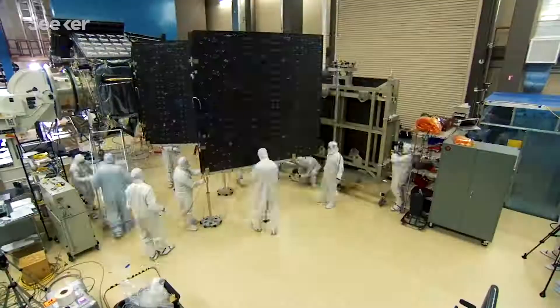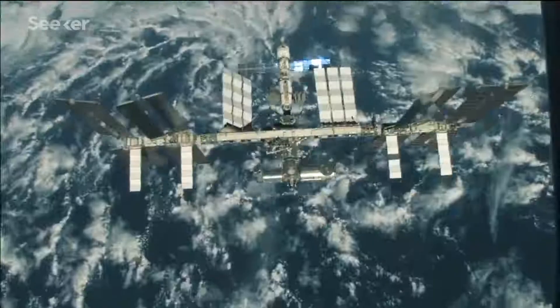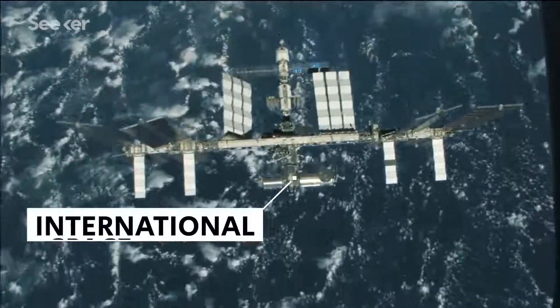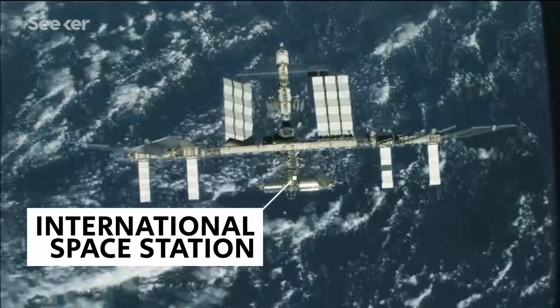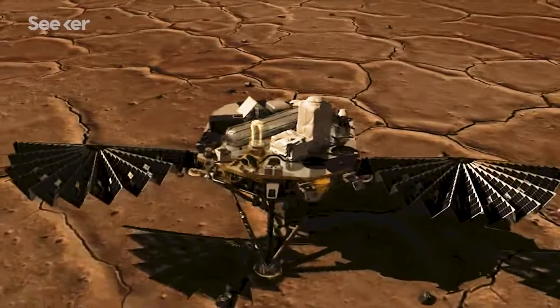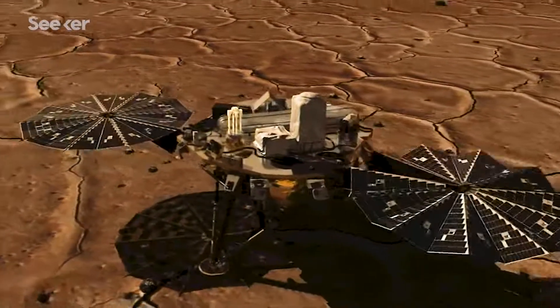Many space projects have used the folding principles of origami. The solar array wings on the ISS use a Z-folding pattern, and the Mars Phoenix lander used a fan-folding solar array called the Ultraflex.